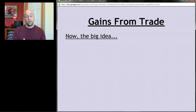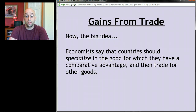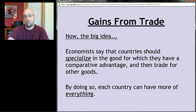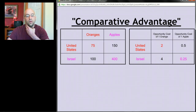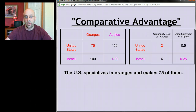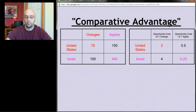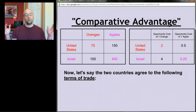We've identified who should produce what: whoever has a comparative advantage should specialize in that product. Economists say countries should specialize in the good for which they have a comparative advantage and then trade for the other goods they want. By doing that, every country can have more of everything — a win-win for everyone. So the U.S. will specialize in oranges, making 75 of them, and Israel will specialize in apples, making 400.